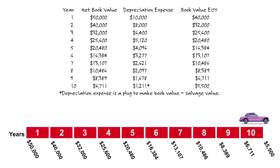Looking at our DDB schedule, each year we multiply the net book value by the constant rate of 20% to get depreciation expense, except for year 10. In year 10, we must have a minimum net book value equal to the salvage value of $5,500, and maximum accumulated depreciation of only $44,500. Therefore, in year 10, the $1,211 is a plug figure — the maximum depreciation that year so we don't exceed $44,500. With a net book value of $6,711 and a minimum of $5,500, you can back into the $1,211.